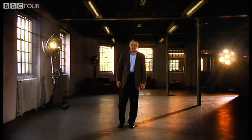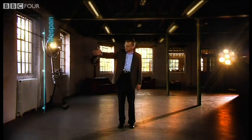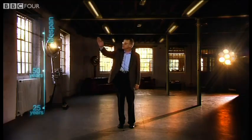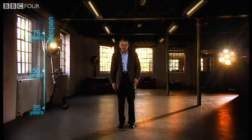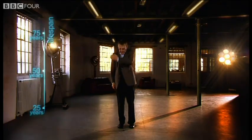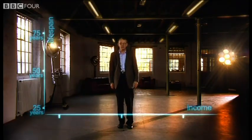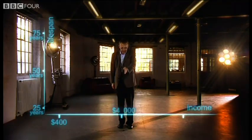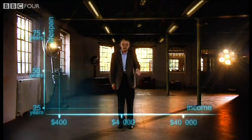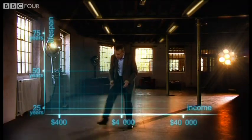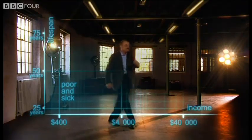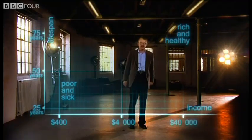First, an axis for health — life expectancy, from 25 years to 75 years. And down here, an axis for wealth — income per person: 400, 4,000, and 40,000 dollars. So down here is poor and sick, and up here is rich and healthy.